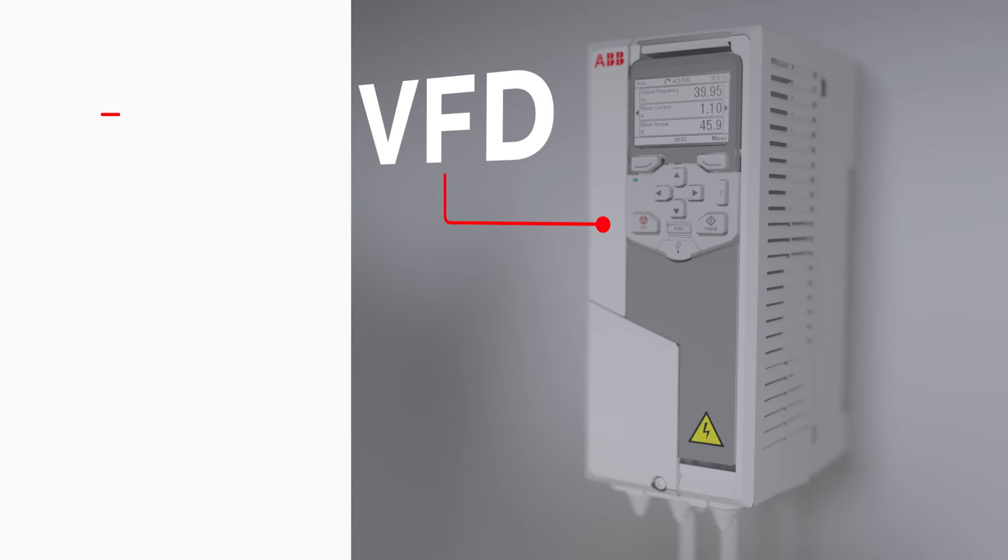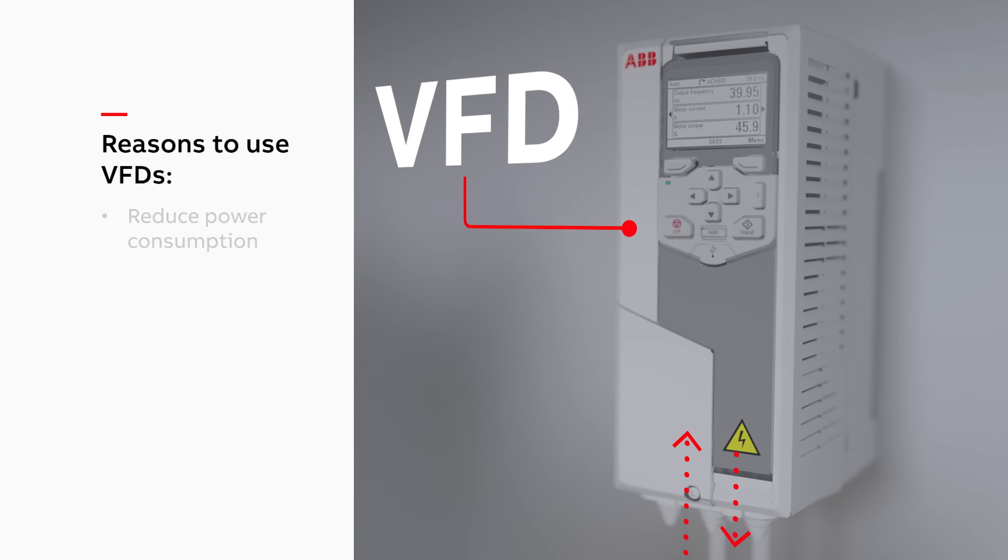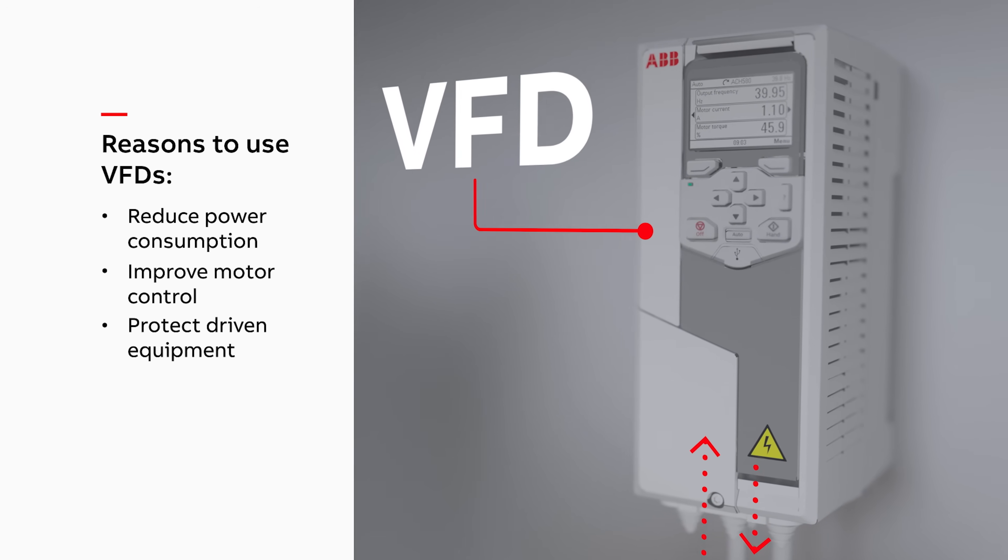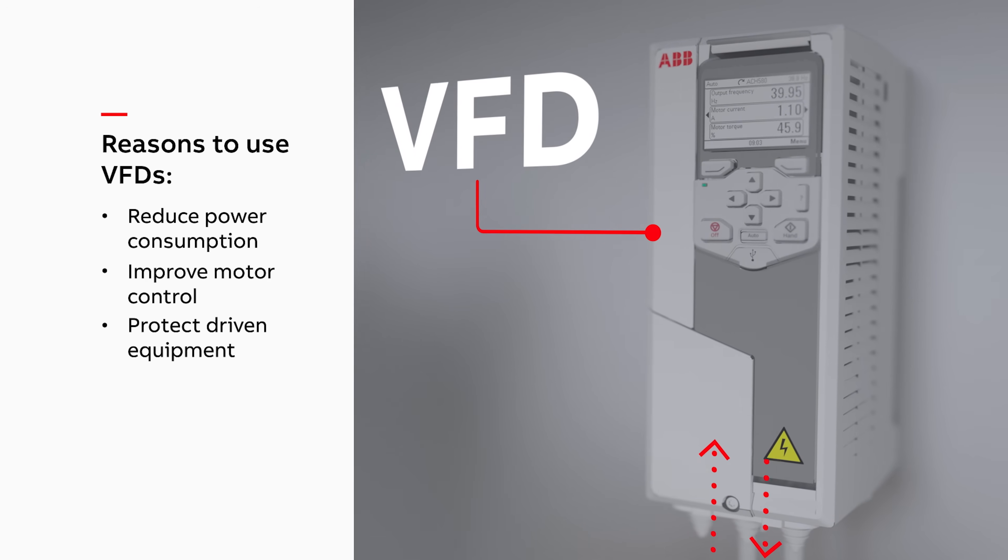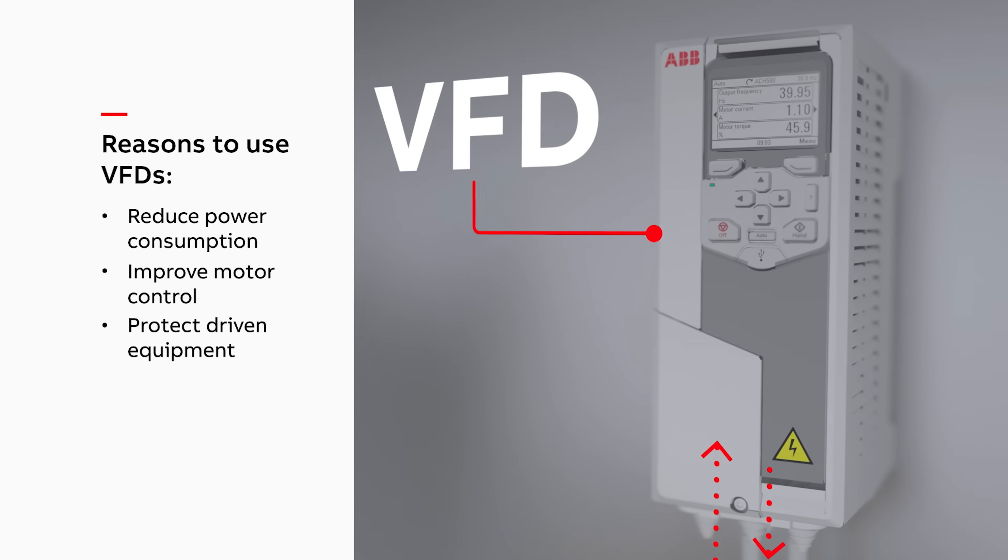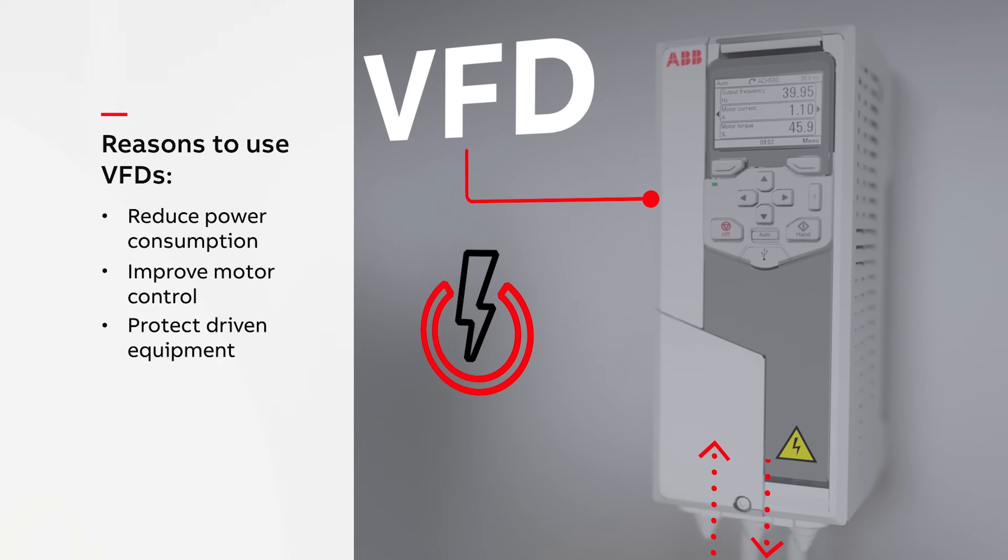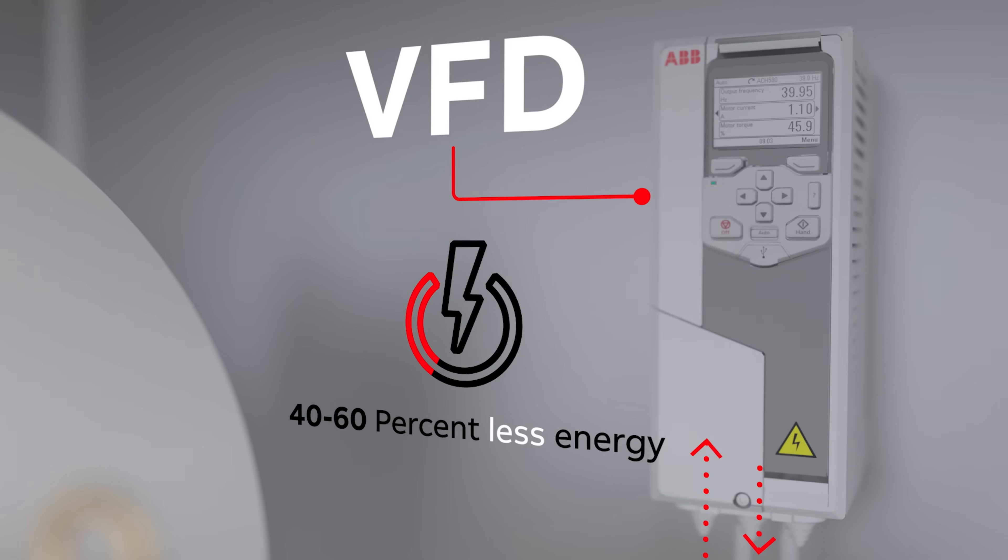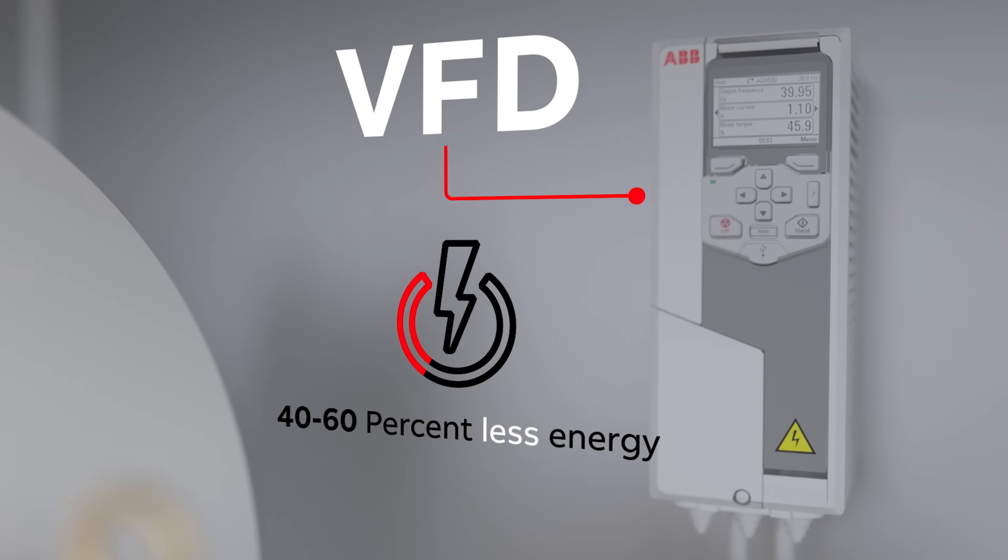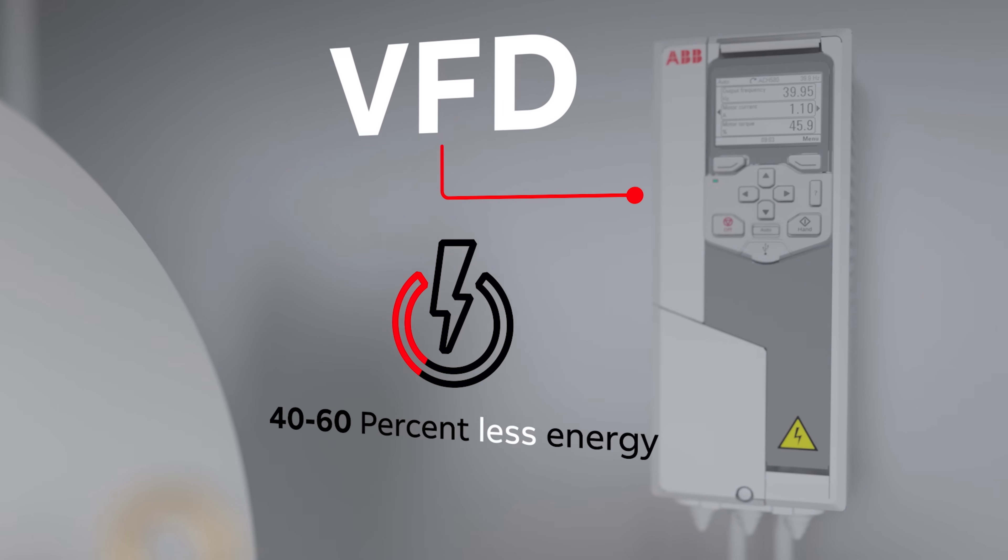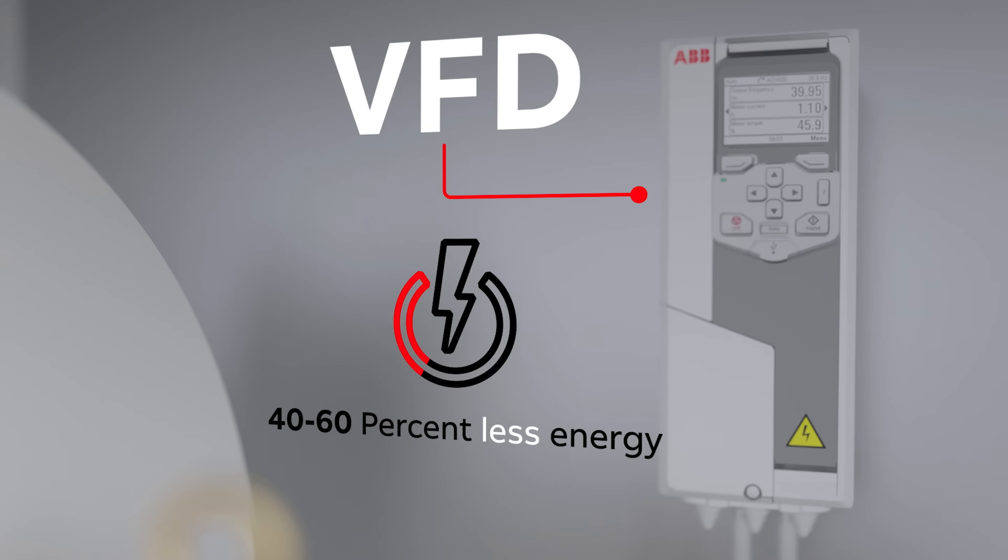VFDs control the frequency and voltage of the electricity that's fed to the motor and the equipment it powers. By removing the mechanical means of speed control, a motor system controlled by a drive uses 40-60% less energy. However, certain issues are presented when energy is controlled through a drive versus directly.